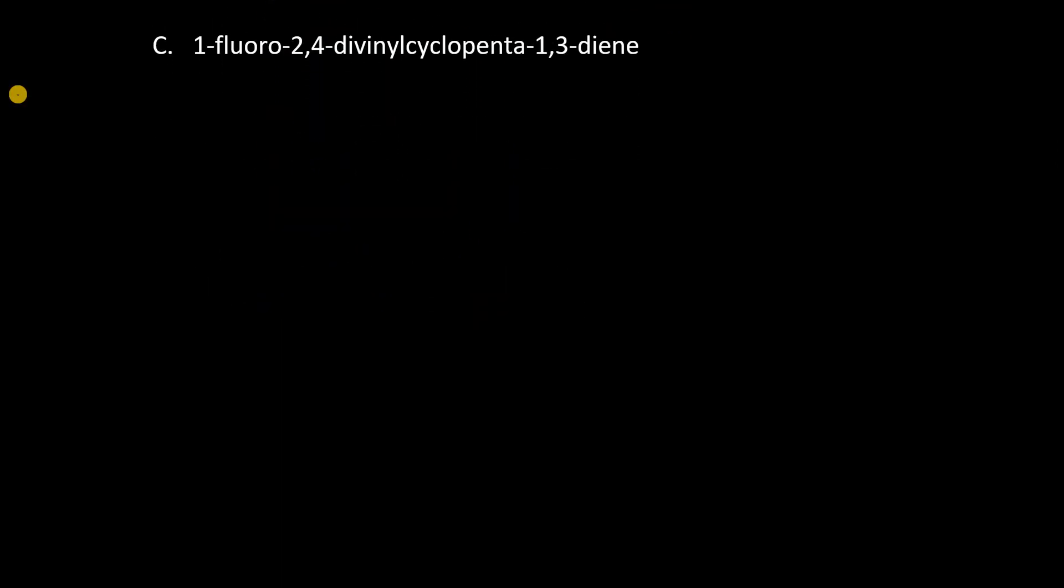So, in part C, we have 1-fluoro, 2-4-divinyl, cyclopenta-1,3-diene. So, let's just focus on the parent compound, cyclopenta-diene, and draw that out first. And arbitrarily, I can start numbering this way, but I'm forced to start numbering at the pi system. I can't put carbon 1 here, because the alkenes take priority over alkanes. Then we can just fill in the substituents.